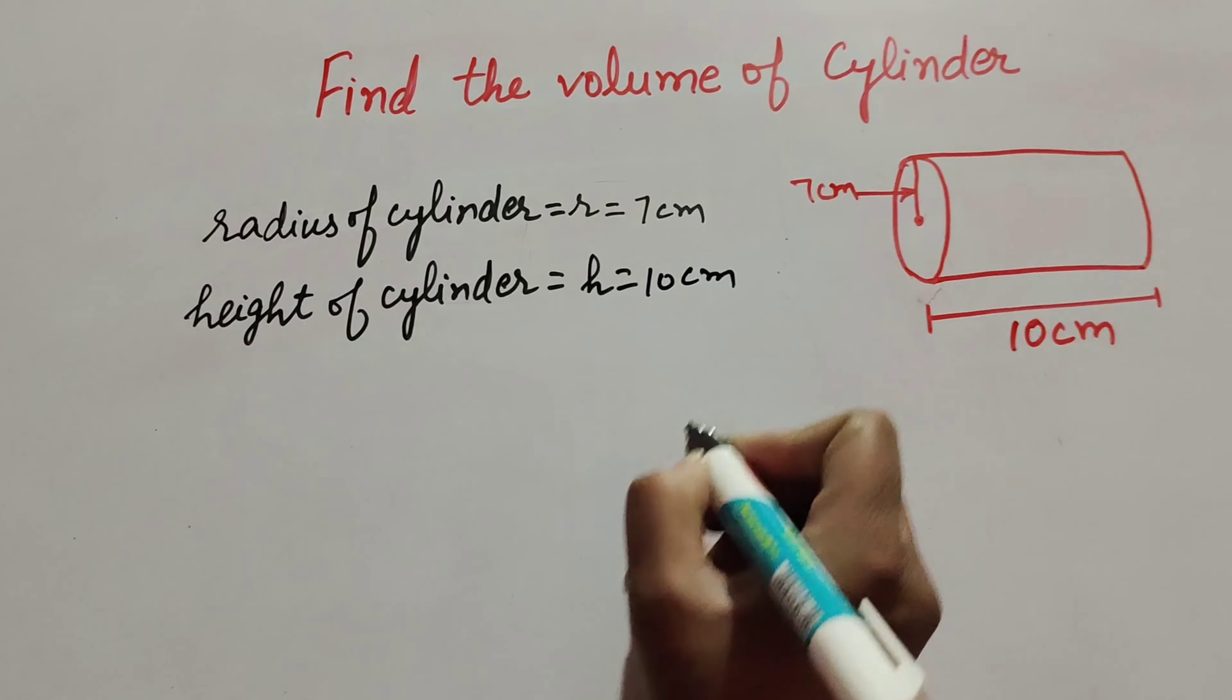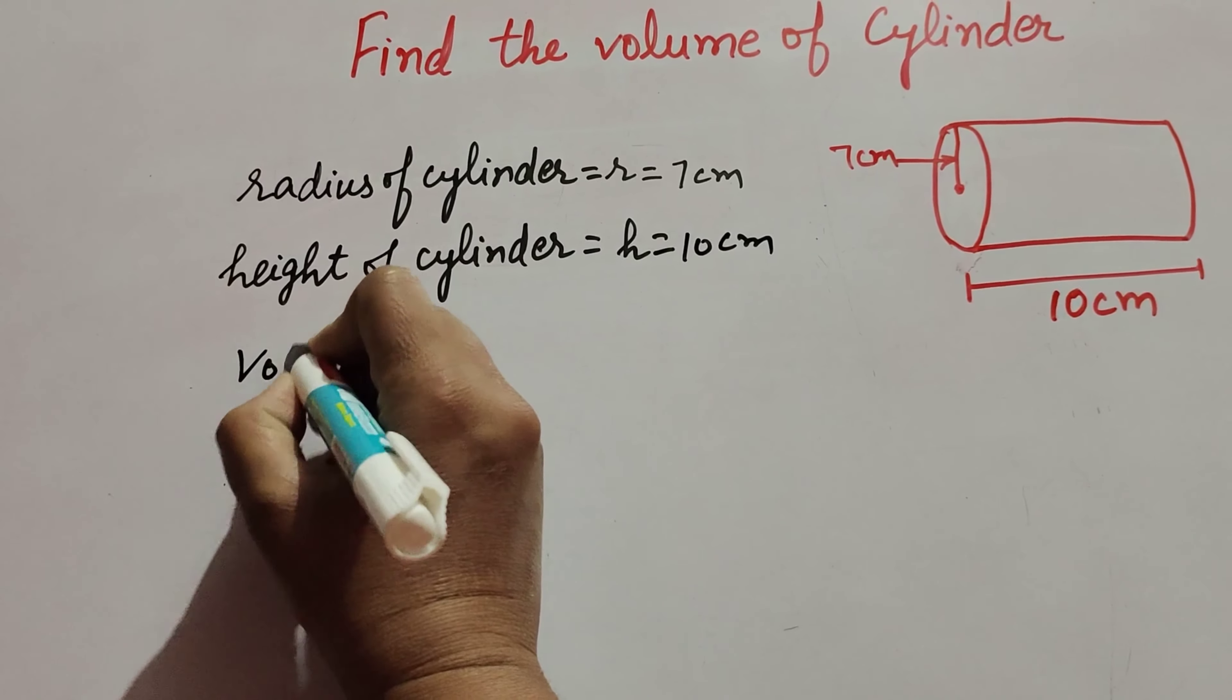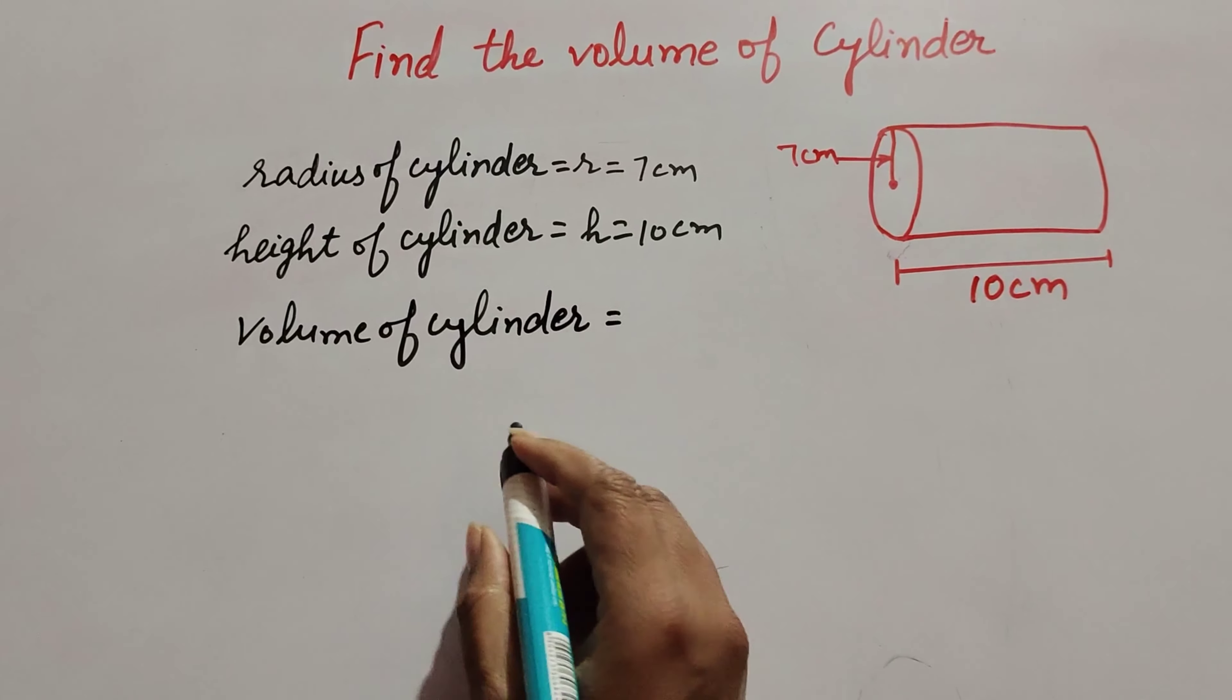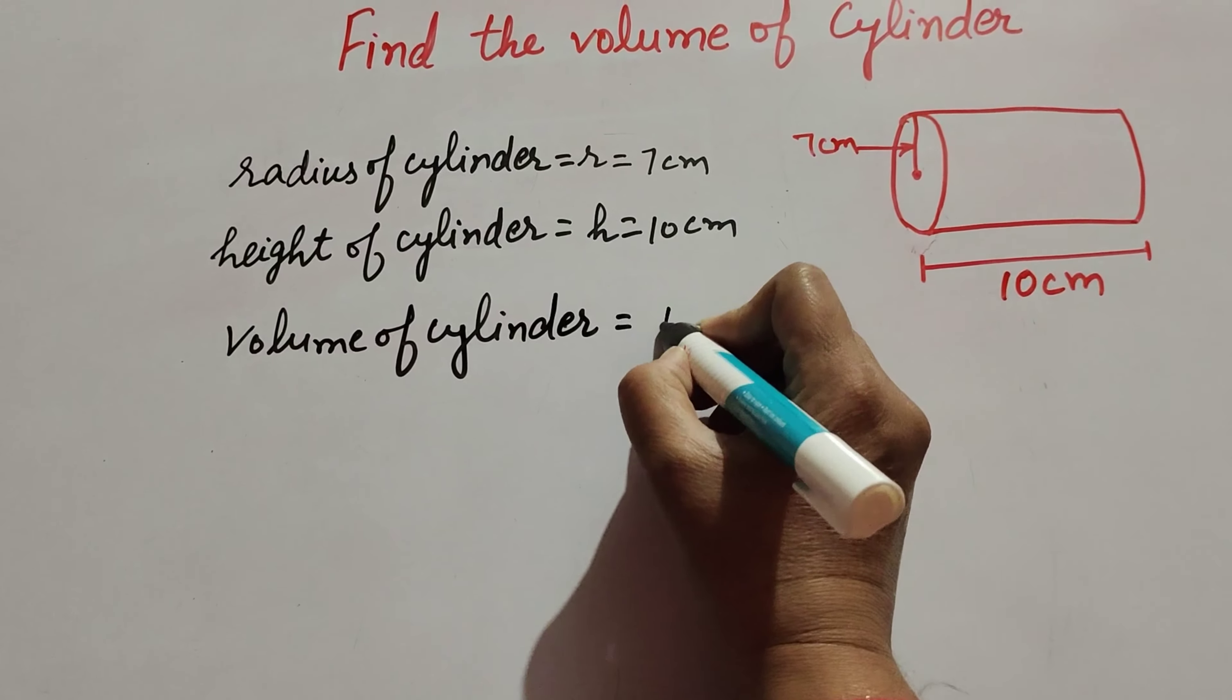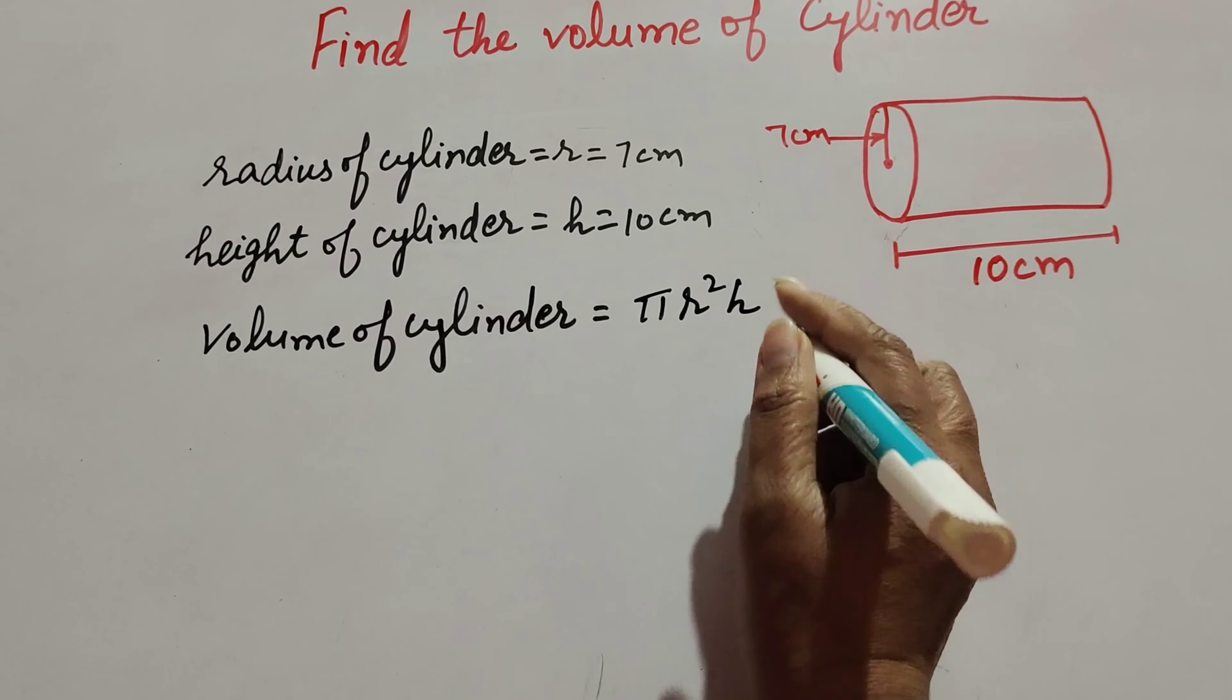The height is equal to 10 centimeters. Now we find the volume of the cylinder. To find the volume of a cylinder, we know the formula: volume = πr²h. This is the formula.